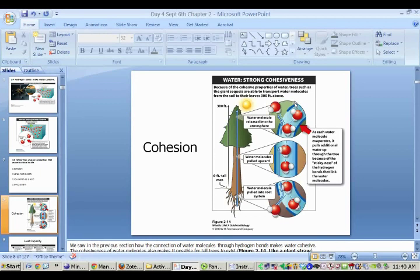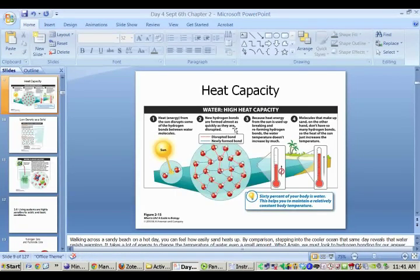And so as each water molecule evaporates it pulls additional water molecules up behind it because of the stickiness of the hydrogen bonds that link those water molecules together. And so if we didn't have this we wouldn't be able to have this transportation system. We wouldn't be able to get 300 foot tall trees that get water all the way down from the very deep reaches of those roots all the way up to the leaves.